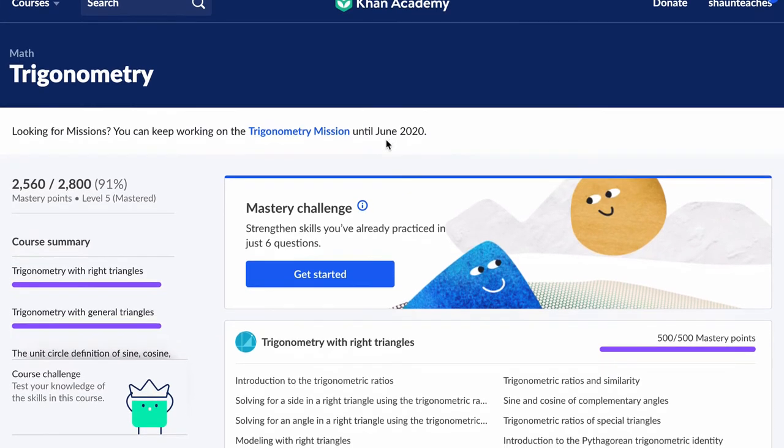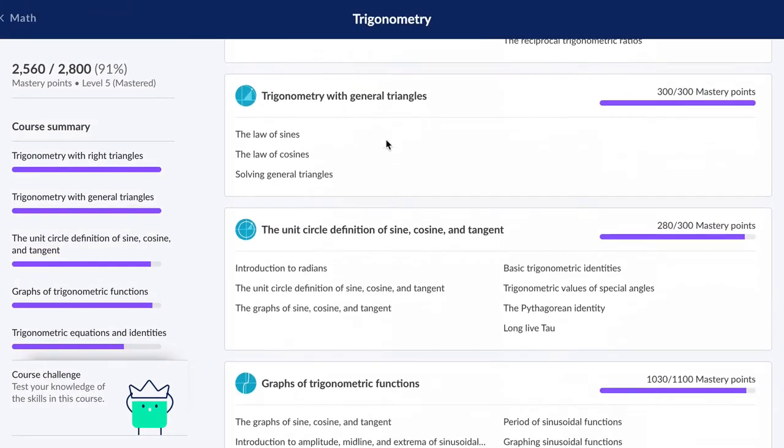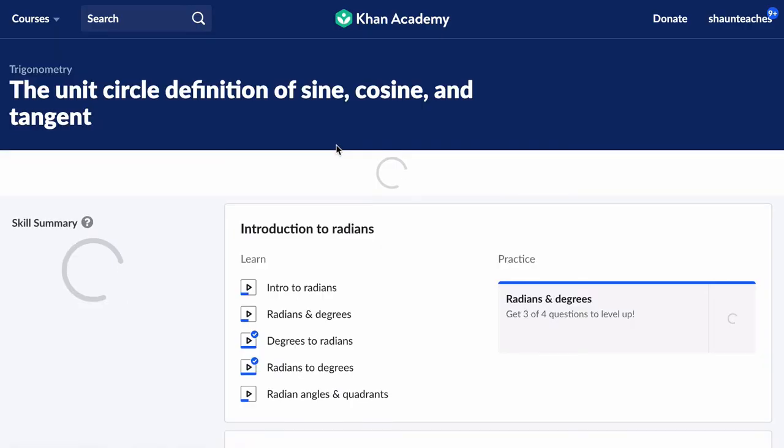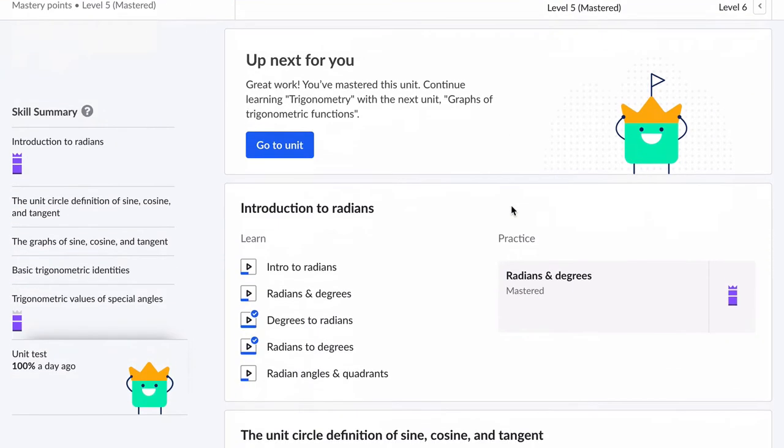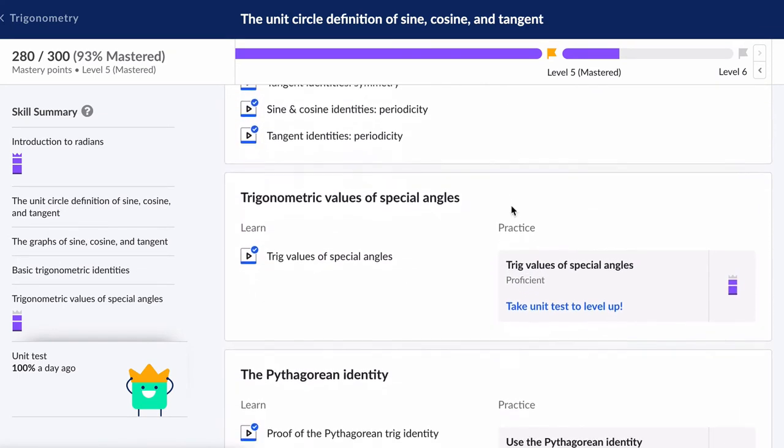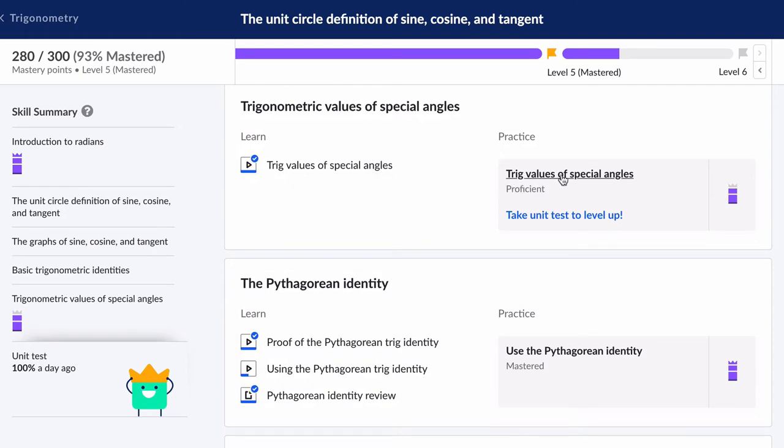Hello, welcome. In this video, we're looking at trigonometry, specifically the unit circle definition of sine, cosine, and tangent. We're going to work on problems in the practice set called trig values of special angles.